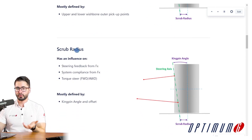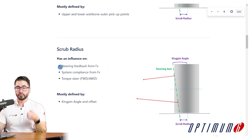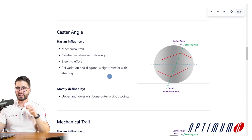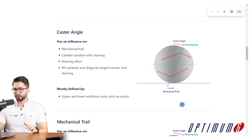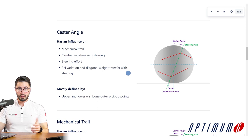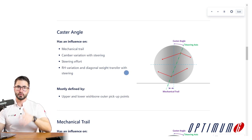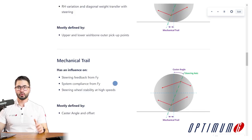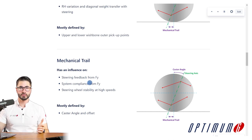Speaking specifically about the scrub radius, we have to focus on how much feedback the driver gets on the steering wheel from FX, as well as other parameters. Now if we look at the side view, we have the caster angle. The caster angle is important to partially define the mechanical trail. It has a big influence on the camber variation with steering, steering effort, ride height variation with steering, and so on. The mechanical trail will define how much steering feedback the driver gets from lateral forces.